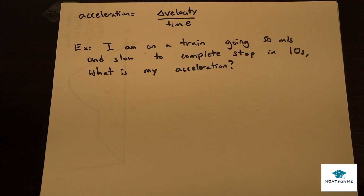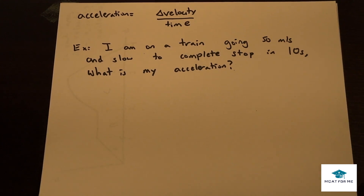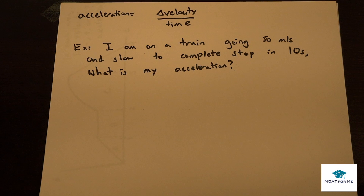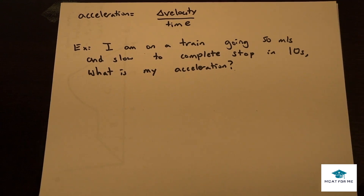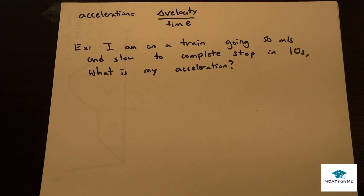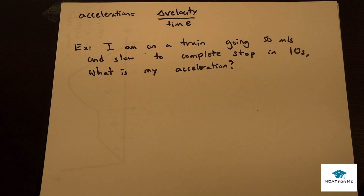Now let's look at acceleration. Acceleration is the change in velocity per unit time. For example: I'm on a train going 50 meters per second and I slow to a complete stop in 10 seconds. What is my acceleration? Note that there's a difference between positive and negative velocity, as well as positive and negative acceleration.